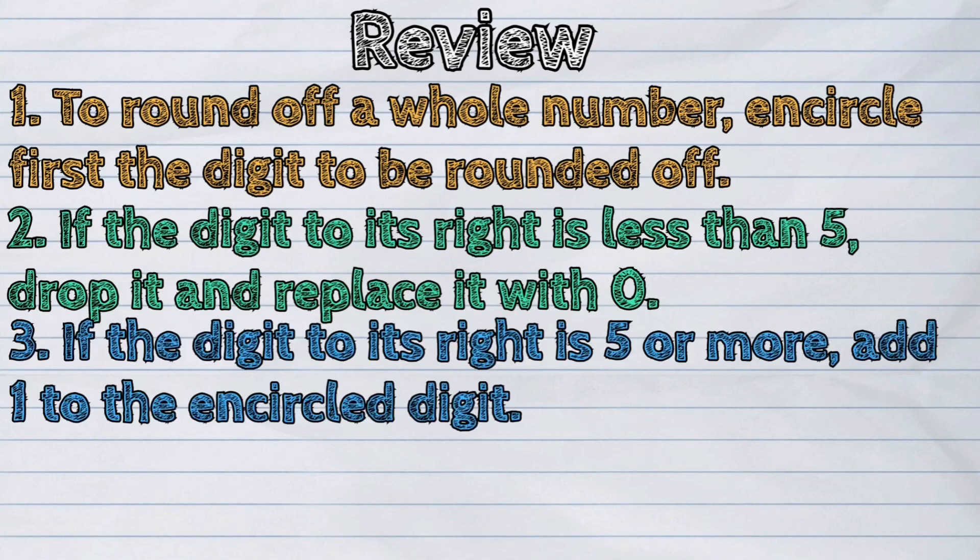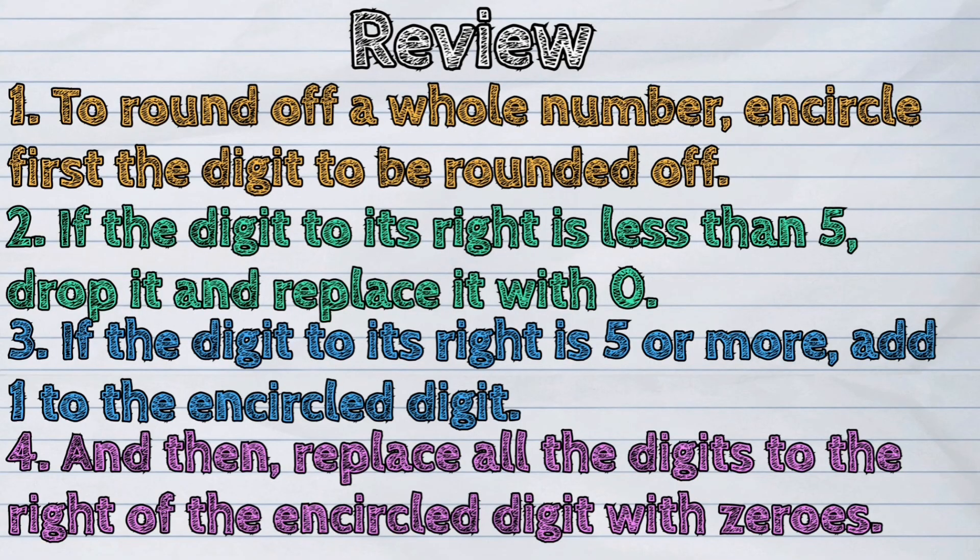If the digit to its right is 5 or more, add 1 to the encircled digit. Then replace all the digits to the right of the encircled digit with zeros.